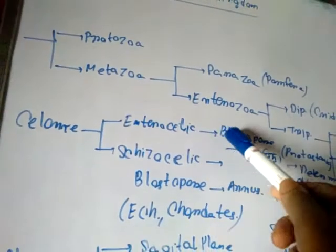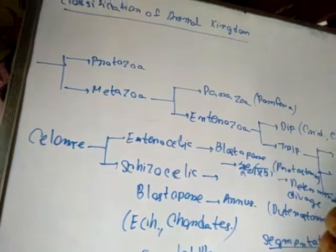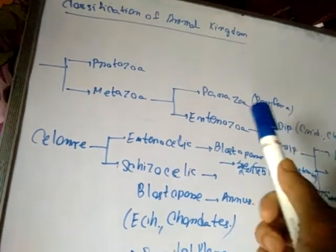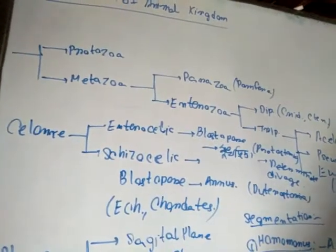Blastocoel is 2 points and size is 2 points. Blastocoel is 2 points.